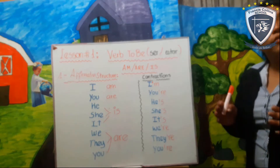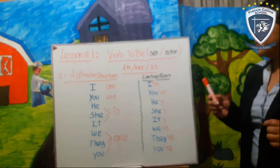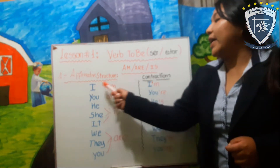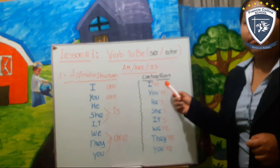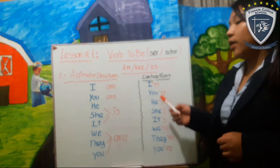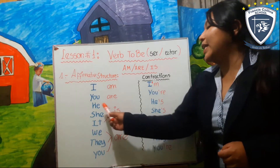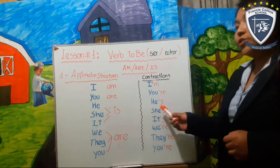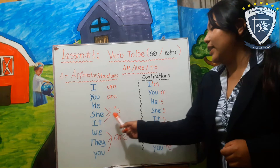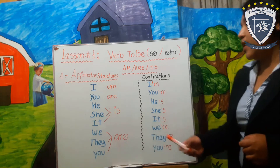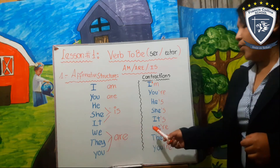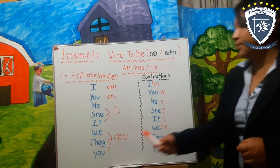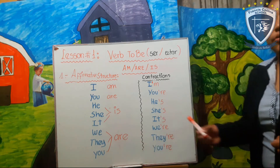Now we have the contractions — tenemos aquí la forma corta. For example: I am → I'm; You are → You're; He is → He's; She is → She's; It is → It's; We are → We're; They are → They're; You are → You're.